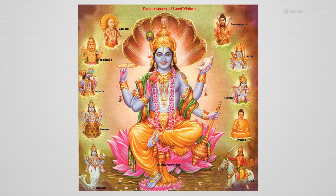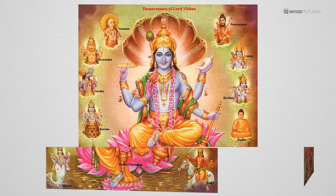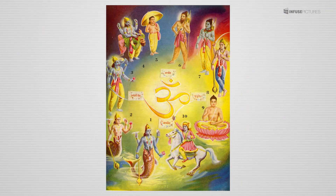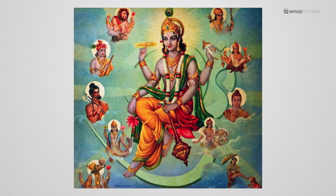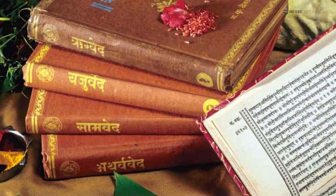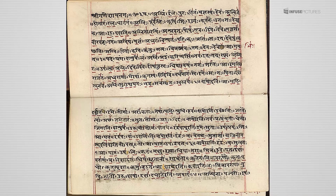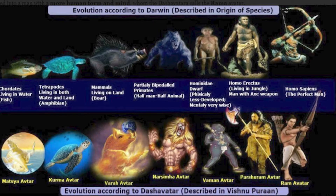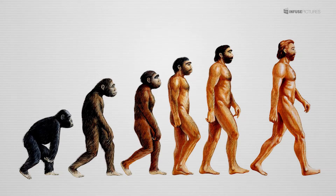We all are aware of the theory of the 10 avatars of Lord Vishnu. What most of us fail to notice is a depiction of the evolution of life forms on earth through this Dashavatara theory. One of the best examples of evolution is the 10 avatars of Lord Vishnu. This theory of avatars is specified in Rig Veda, the first scripture known to humankind. This theory closely syncs with Darwin's theory of evolution, discovered by Charles Darwin, a theory widely followed by the Western system of education.